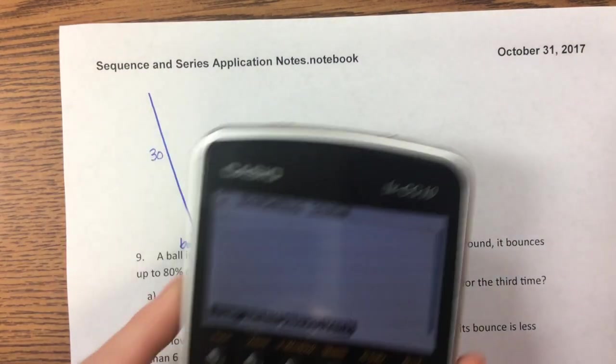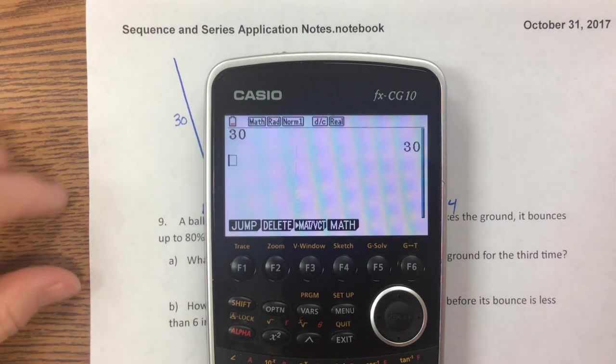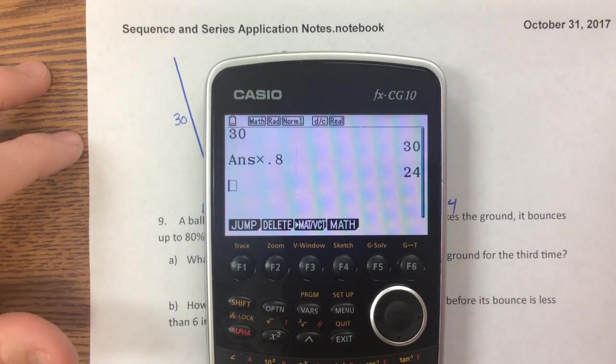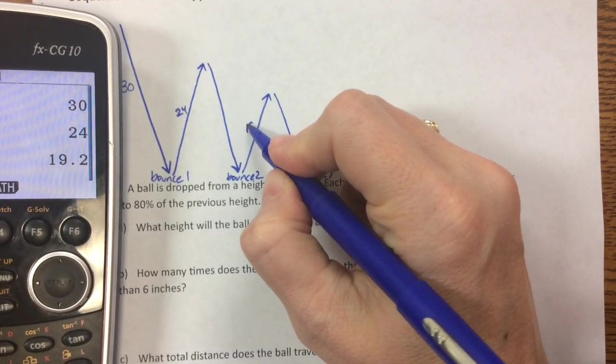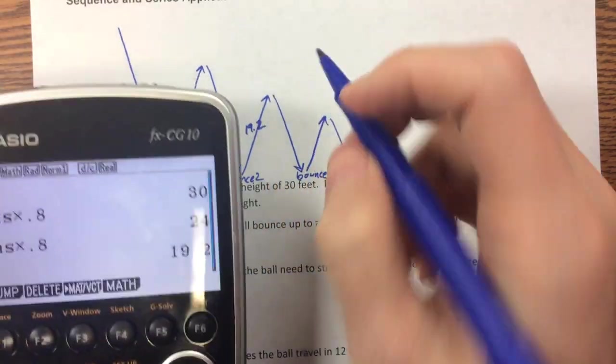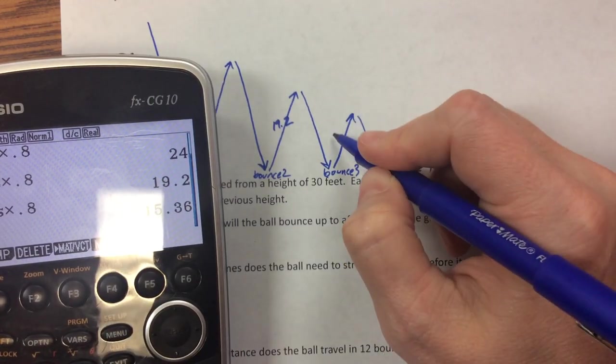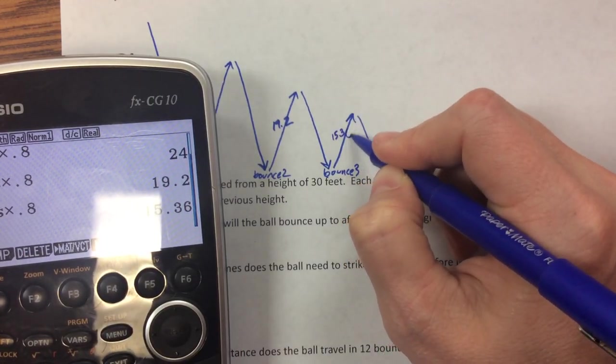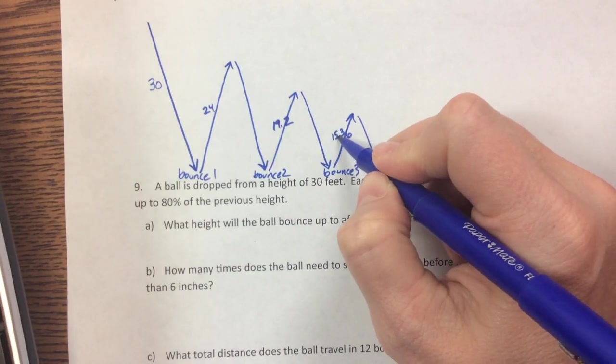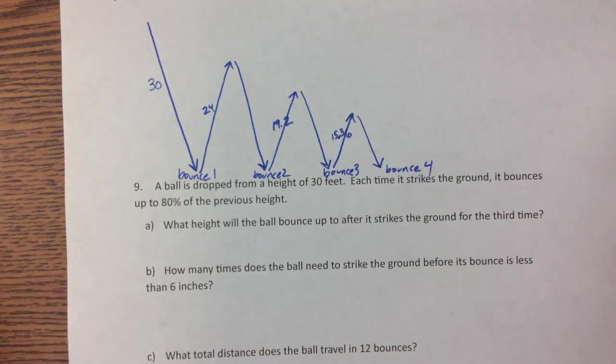If you remember how we can do our recursive stuff: 30 times 0.8, so 24. Then 19.2 is the next one. The next one becomes 15.36, and then we can keep going and find more of these values.